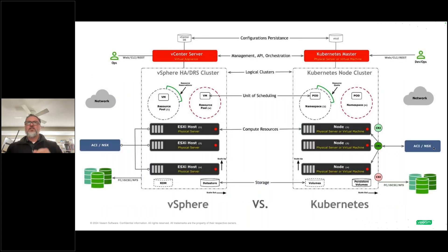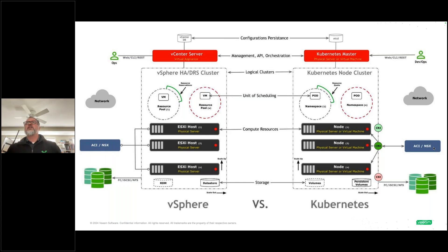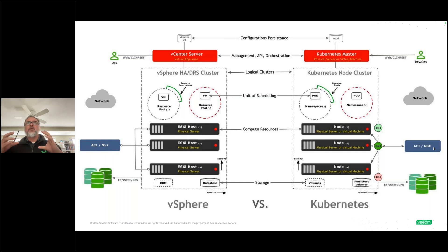Here's a comparison slide mapping VMware concepts to Kubernetes equivalents. The concept of a virtual machine maps to a pod or VM inside Kubernetes. A VMware resource pool is synonymous with a Kubernetes namespace. Datastores in vSphere map to volumes in Kubernetes. This helps people get level-set on where we are when comparing the two technologies.